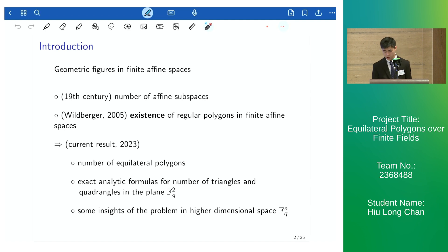In the late 19th century, there is a result about the number of affine subspaces, but it is not until recently that Wilberger demonstrated the existence of some regular polygons in particular finite affine spaces.